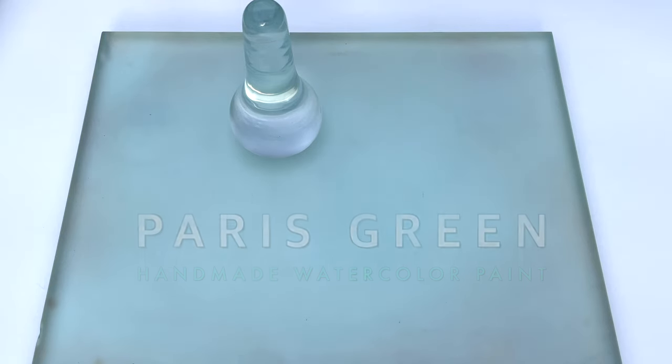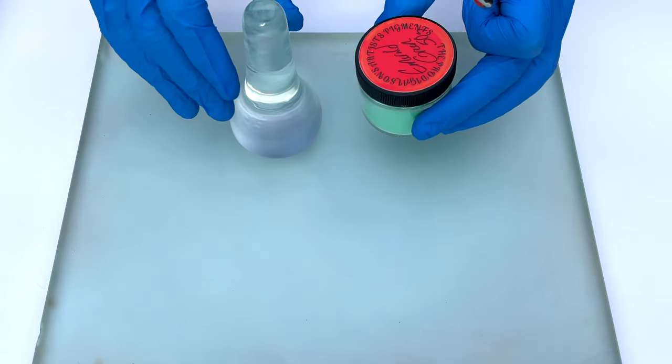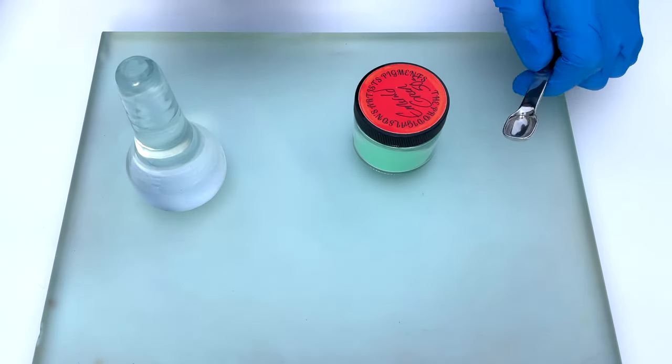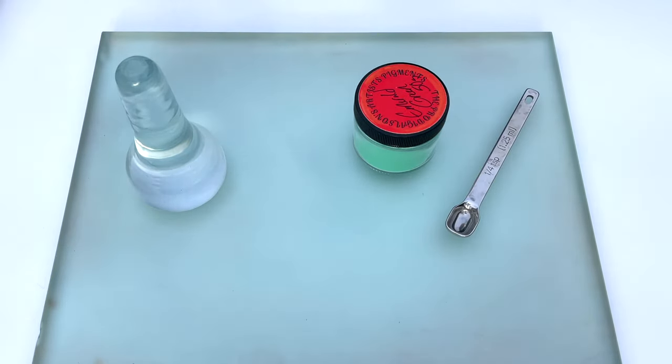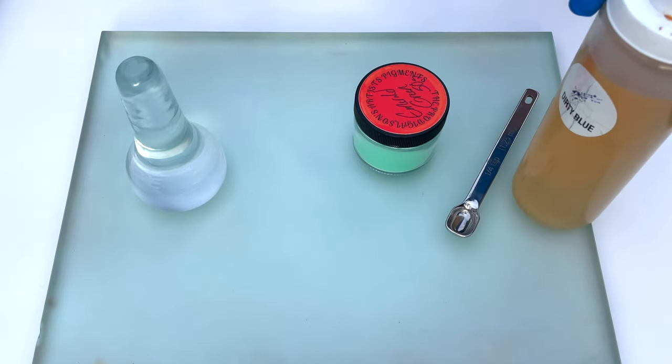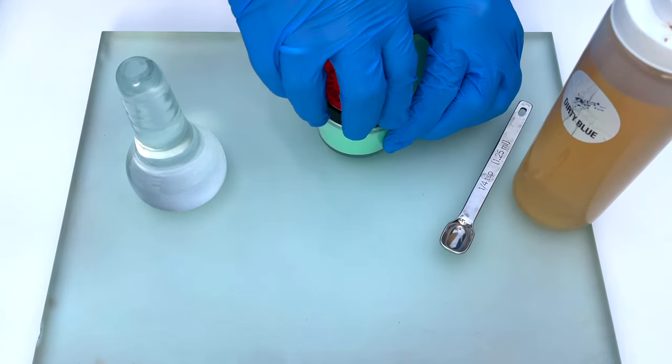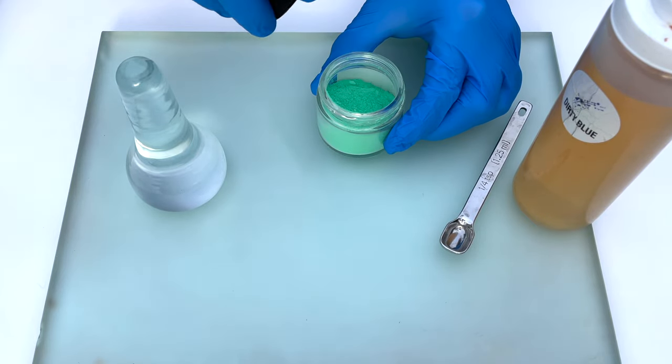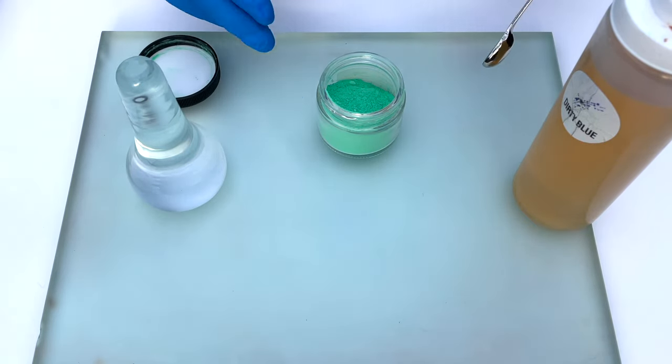Today, I'm going to tell you about Paris Green, also known as PG21. As a color itself, as we know it now, it's not that special. You can easily mix this with a common green pigment and a white, although it might lack the final granulating effect that Paris Green has.